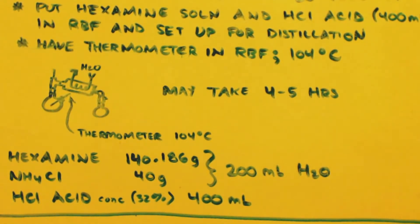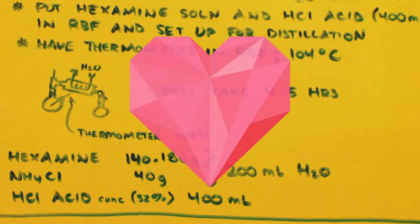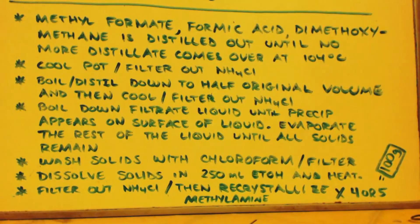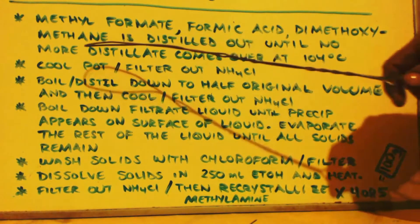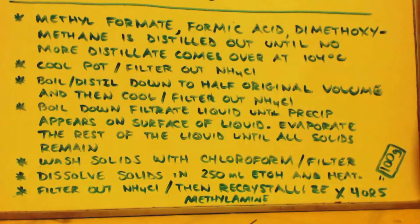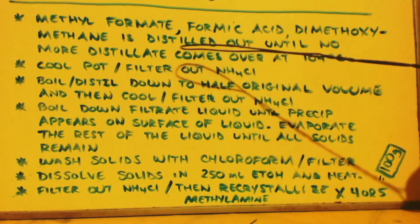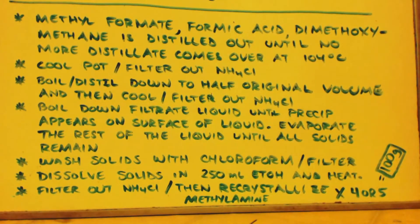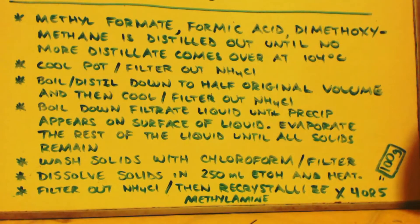Heat it up to 104°C until nothing else distills over. During that time you're going to distill out some methyl formate, formic acid, and methoxymethane. Keep distilling until no more distillate comes over at 104°C — it may take four or five hours. At that point, turn off the heat, cool down the pot. Once it gets cool enough, put it in the freezer or refrigerator and cool it all the way down.